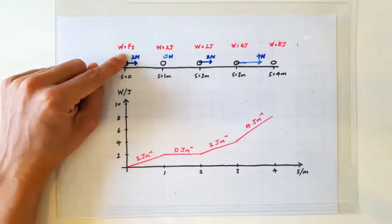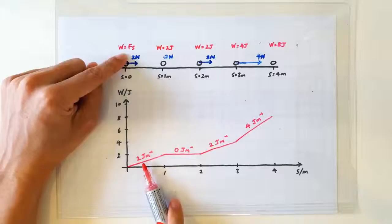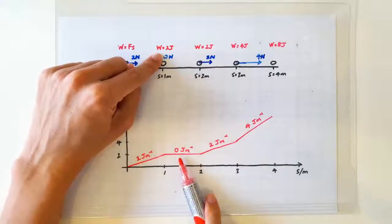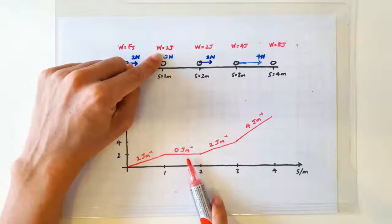So when the force is 2 newtons, the energy graph is going to increase at the rate of 2 joules per meter. When the force is 0 newtons, the energy graph increases at the rate of 0 joules per meter.